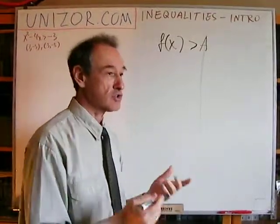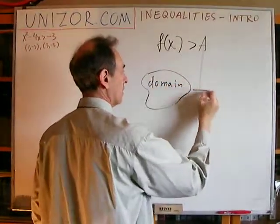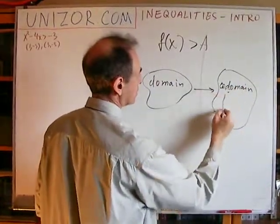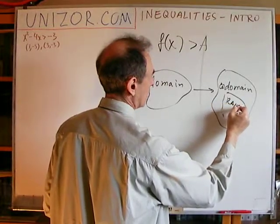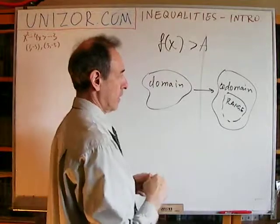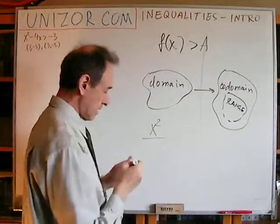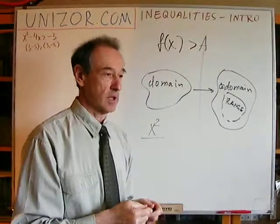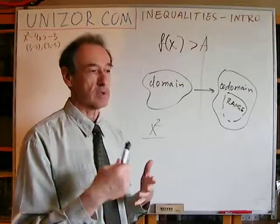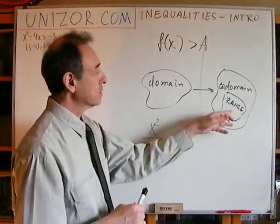Let's think about what the function is. A function is some kind of rule which connects the elements of the domain with elements of the codomain, and somewhere inside the codomain we have the range of all the values this particular function takes for all the different arguments from the domain. The codomain sometimes can be greater than the range, sometimes equal. For instance, the function x squared — which converts a real argument to a real value — has real numbers as domain and real numbers as codomain. The range is, however, all the non-negative numbers.